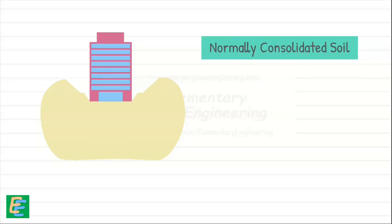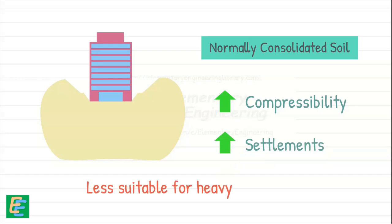The soil will settle furthermore under this new higher load and effective stress. That is why normally consolidated soils exhibit high compressibility and large settlements when loaded, making them less suitable for supporting heavy structures.